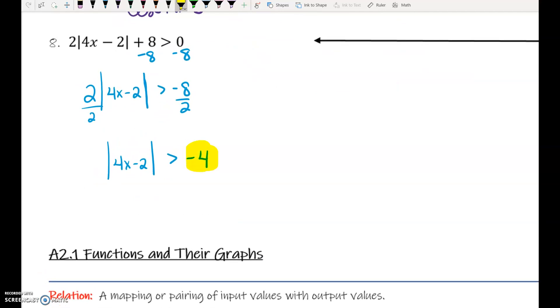I see a negative. Anytime that we see a negative with absolute value, we need to stop and think it through. The absolute value on the left is going to result in a positive number on the left. On the right side, we have a negative number. Is that a true statement? Yes.